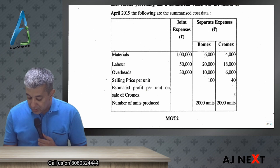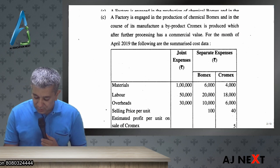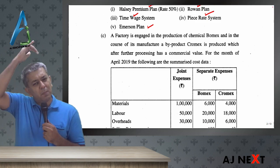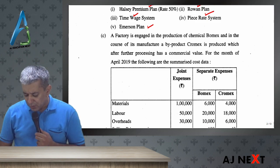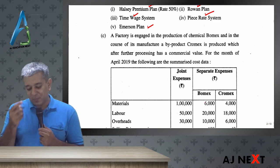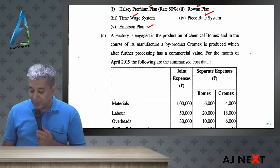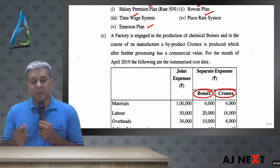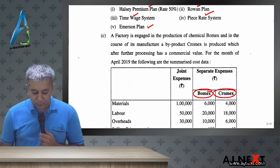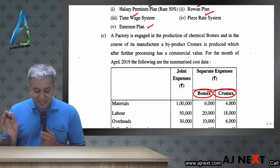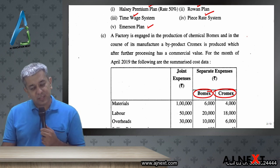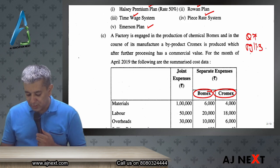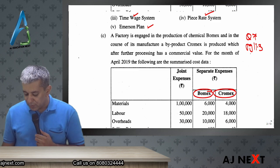Part C — I think the moment our students must have seen it, those guys must have become very happy. It was ditto, same question number by number, koi difference nahi. The institute did change the name — in our books it was Bomex or Brucil; they changed Brucil to Cromex. But the joint products and by-products exact same question is in our book with the same numbers. That was question number seven, page number 11.3.